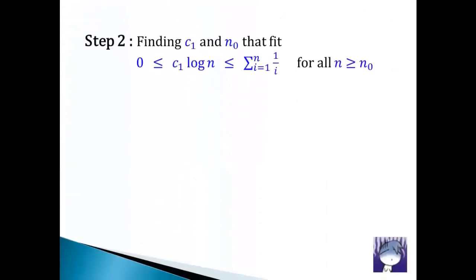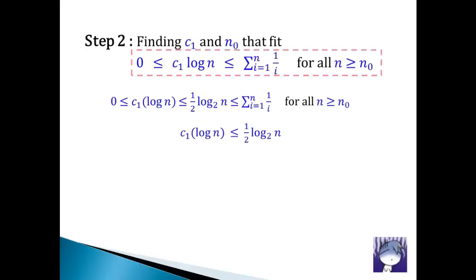From previous slide, we got this. Because the sum of the first n terms of harmonic series is not lower than half of floor log n base 2, we will find c1 and n0 from this inequality. And the same c1 and n0 will fit our main inequality too.